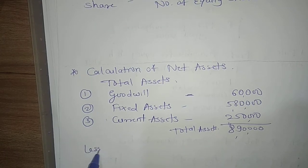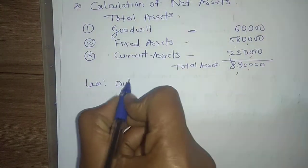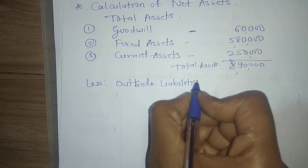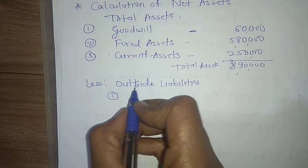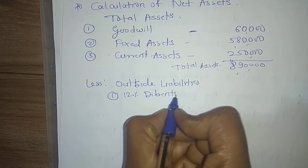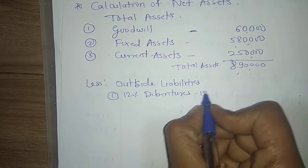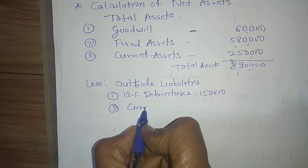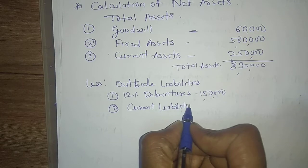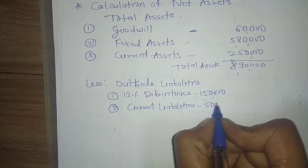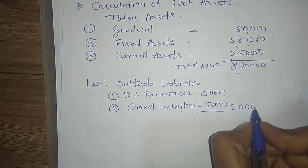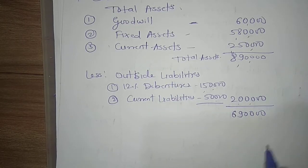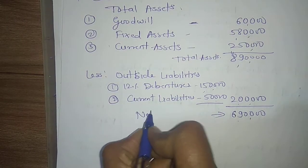Less outside liabilities, also called external liabilities. The items are: 12% debentures — amount 1 lakh 50,000 (long-term liability), and current liabilities — amount 50,000. Total outside liabilities: 2 lakh rupees. Deducting this, we get 6 lakh 90,000, which is net assets available to equity shareholders.